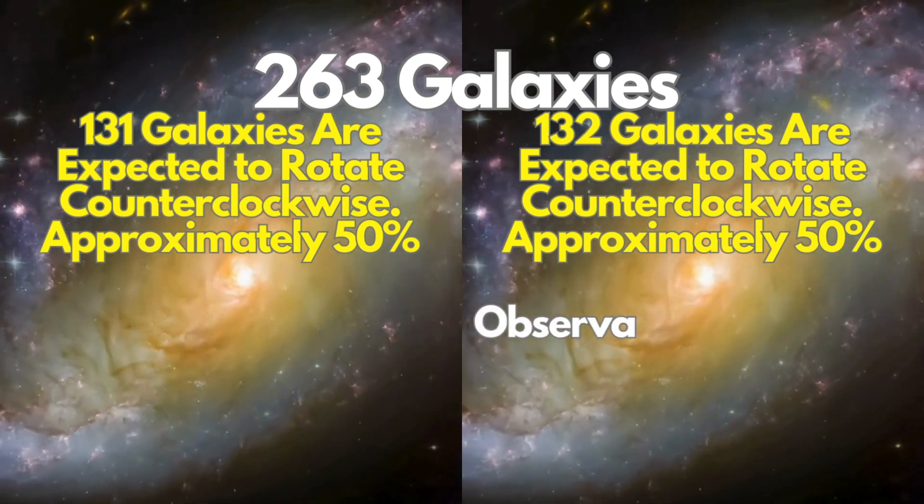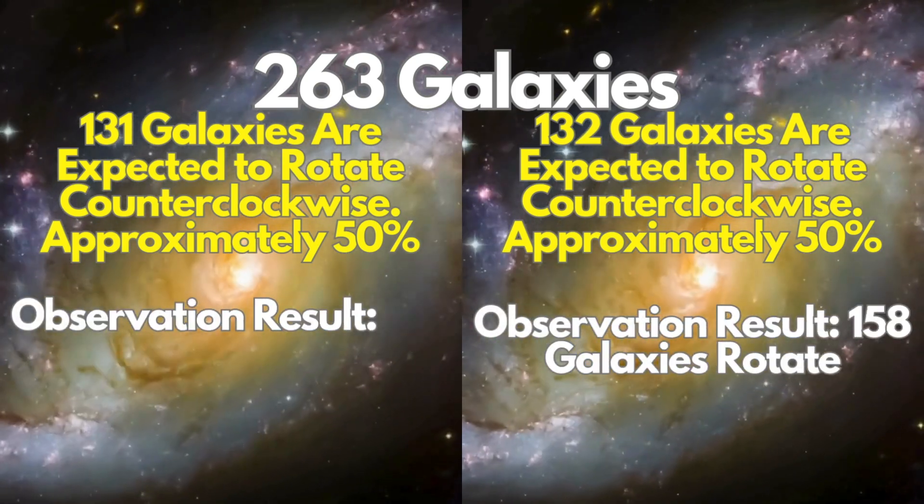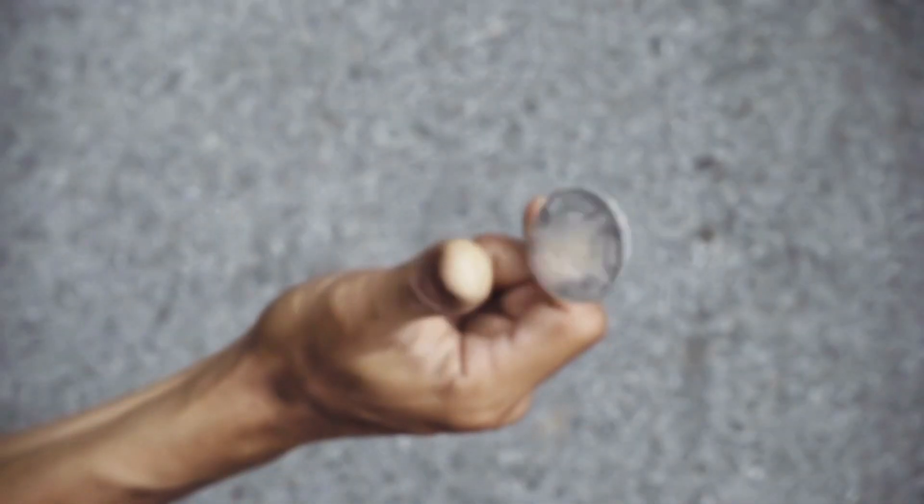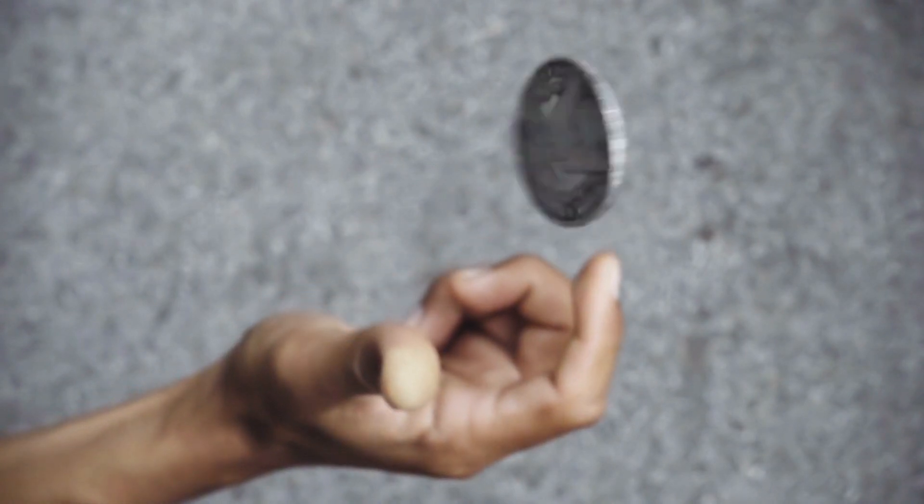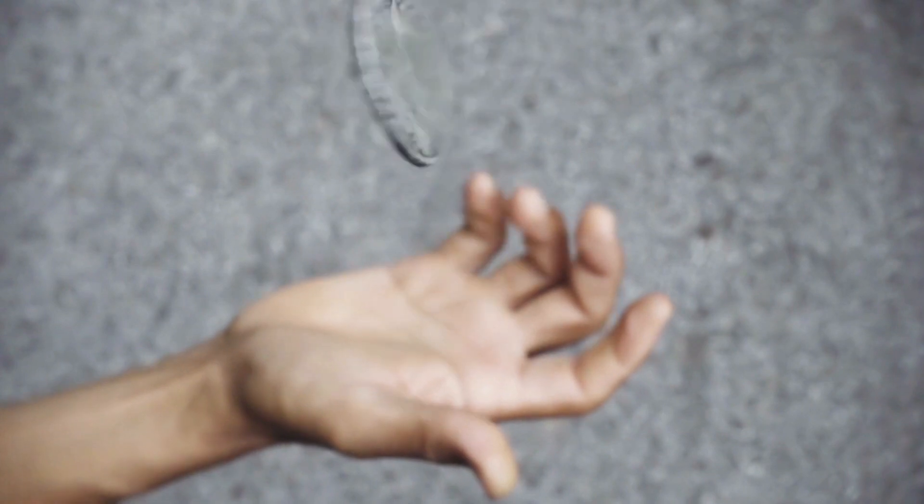This asymmetry challenges cosmological principles stating the universe should be homogeneous and isotropic at large scales. Like flipping a coin 20 times and getting 15 heads and 5 tails, the early universe's galaxy spins defy statistical expectations.